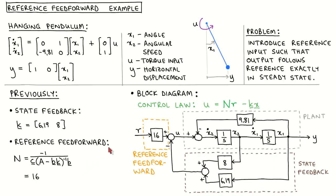If we look at the block diagram, we can understand the reference feedforward as follows. Based on our knowledge of the behavior of the plant, we calculate what the gain should be that we multiply the reference input with such that the output is the same as the reference input in steady state. However, there is no direct comparison between the reference input and the output, which means that the system cannot correct a steady-state error if one occurs. This could be caused by an inaccurate plant model, but also by constant disturbances experienced by the plant.